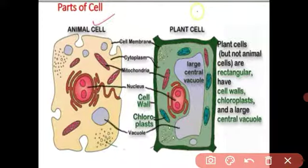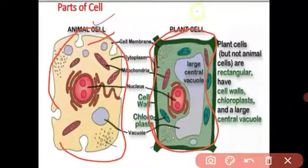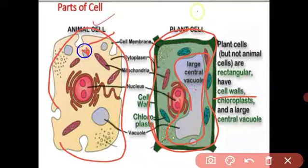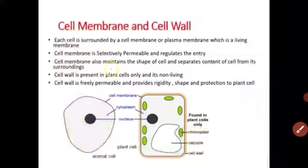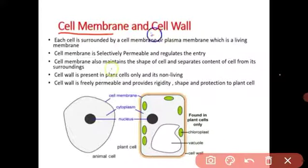Let us now look at the details of each and every cell organelle one by one. This is the structure of the cell — the animal cell and the plant cell. The cell wall is present only in the plant cell, and the large vacuoles are also present only in the plant cell. Another organelle is centrioles, or centrosomes, which are present only in animal cells, and their main function is cell division.